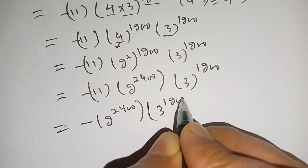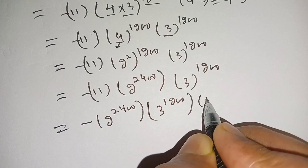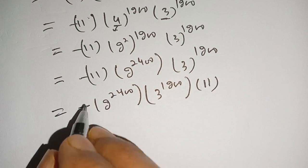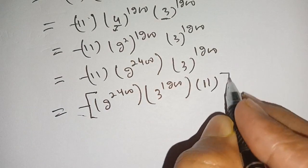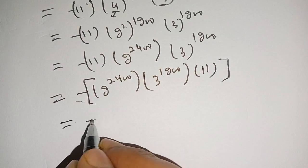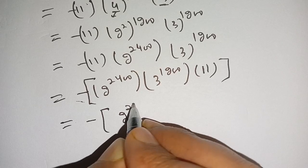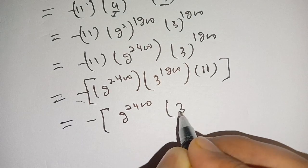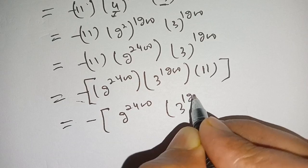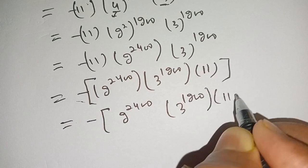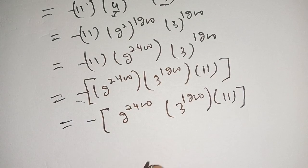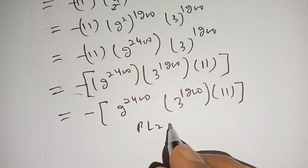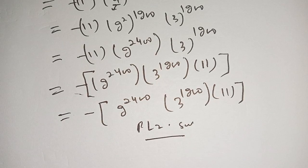In ordered form, the final simplified answer is minus 2 power 2400 times 3 power 1200 times 11. If you're new here, please subscribe to the channel for more videos. See you in the next video, bye!